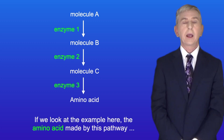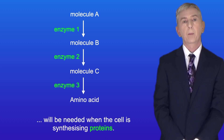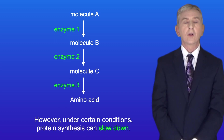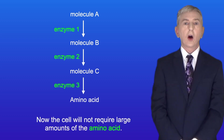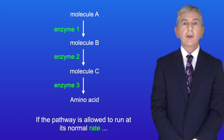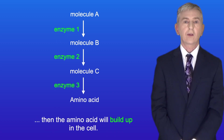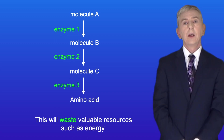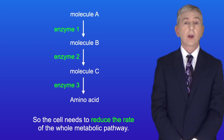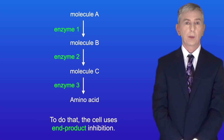Now metabolic pathways such as these are tightly controlled. If we look at the example here, the amino acid made by this pathway will be needed when the cell is synthesizing proteins. However, under certain conditions, protein synthesis can slow down. Now the cell will not require large amounts of the amino acid. If the pathway is allowed to run at its normal rate, the amino acid will build up in the cell and this will waste valuable resources such as energy. So the cell needs to reduce the rate of the whole metabolic pathway, and to do that the cell uses end product inhibition.